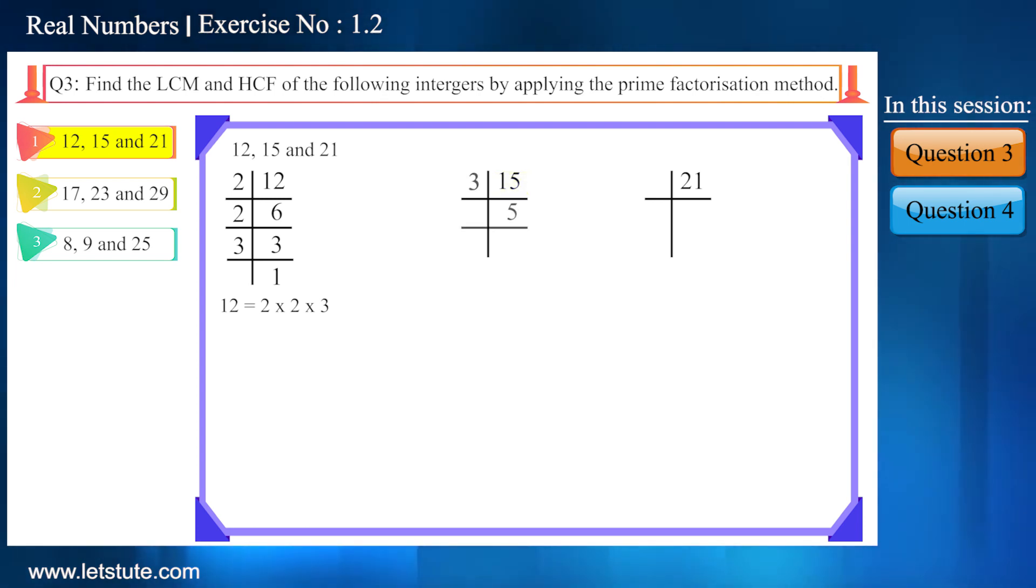Similarly, let's find the factors of 15. Here 3 into 5 is 15, here it will be 5. Now 5 into 1 is 5. So we can write 15 as 3 into 5. And next, 21: 3 into 7 is 21. Now 7 is a prime number, therefore 7 into 1 is 7. So we can write 21 as 3 into 7.